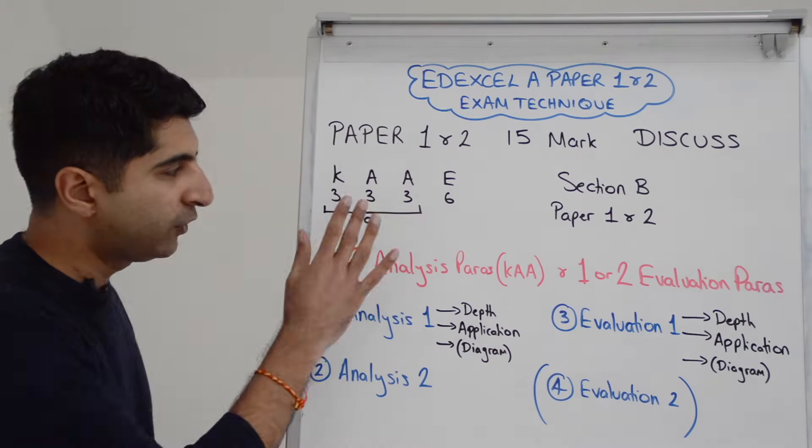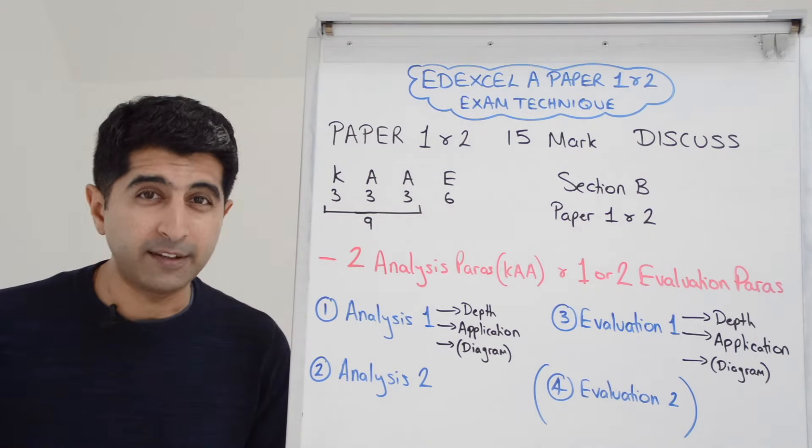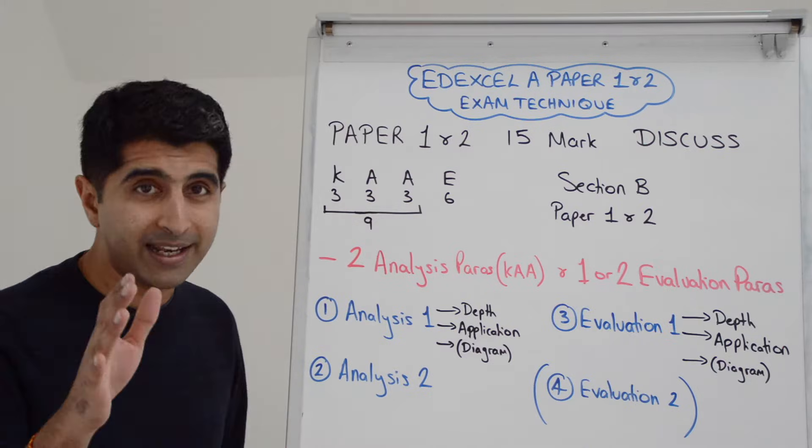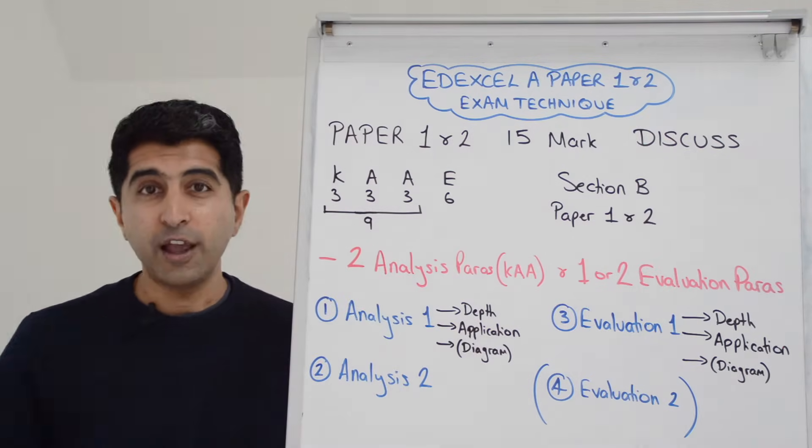It's now three marks for knowledge, three application, three analysis. So that is nine marks in total, basically, for depth of analysis with good application marked in levels, and six marks for evaluation now.